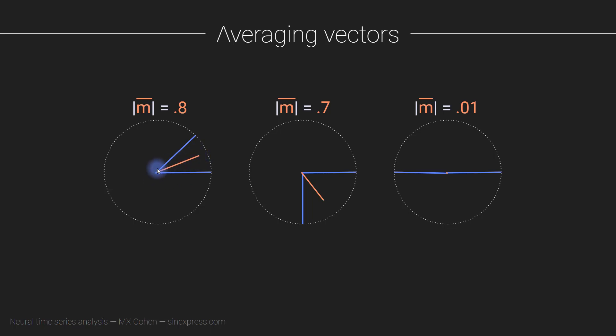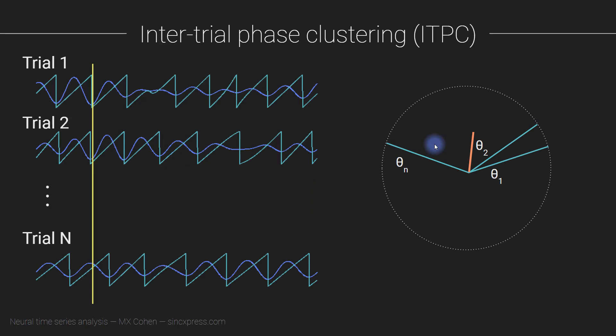The idea is that the length of this average vector tells us something about the consistency of these phase angles. When these phase angles are clustered together, the length of the average is large, and as these individual phase angles get more and more distributed around the circle, the length of the average vector tends towards zero.